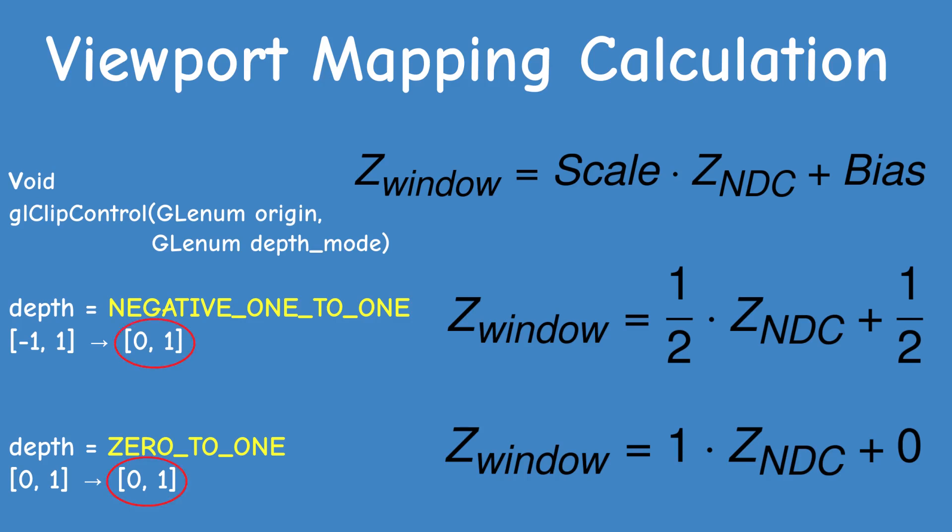The bottom line is that regardless of how the depth mode is configured, we always end up with the Z range of 0 to 1, and this is the range of the depth buffer.